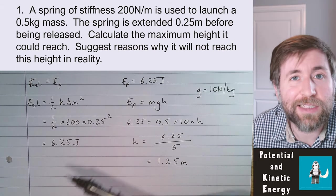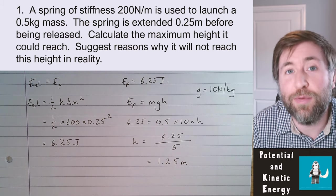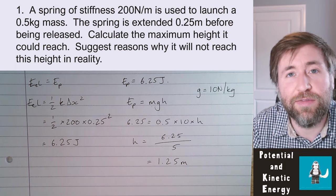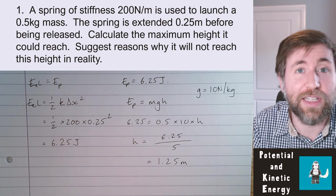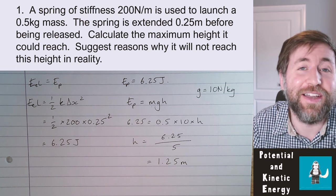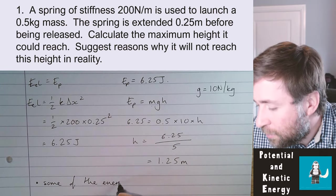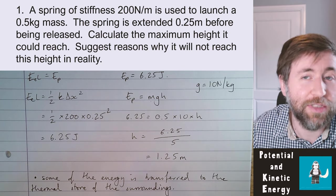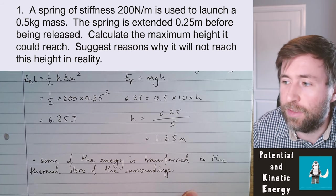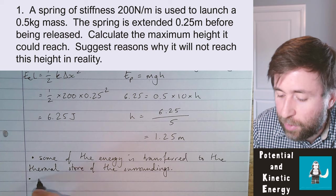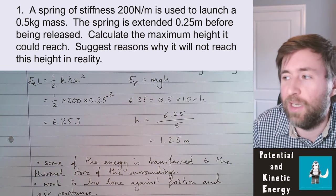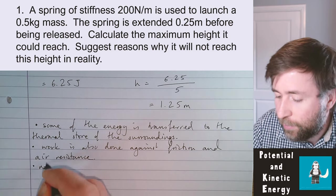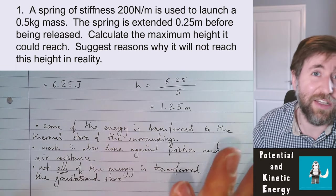It also asks us to suggest reasons why it won't reach that height in reality. The answer involves every energy transfer — we lose some energy to heating of the surroundings. We do work against friction and against air resistance. Some energy is transferred to the thermal store of the surroundings, so not all of the energy actually ends up in the gravitational store.